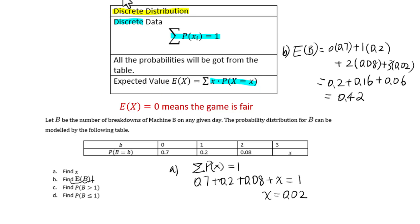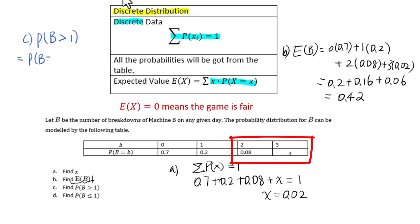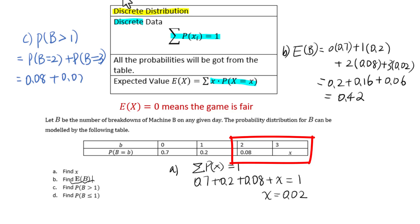For part C, find the probability of B greater than 1. That equals probability of B equals 2 plus probability of B equals 3, which gives us 0.08 plus 0.02 equals 0.1.